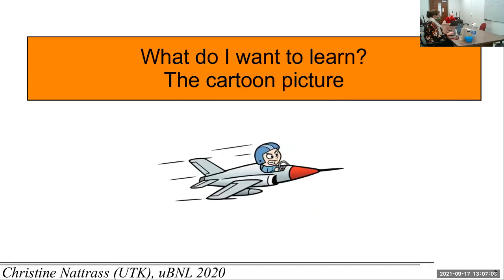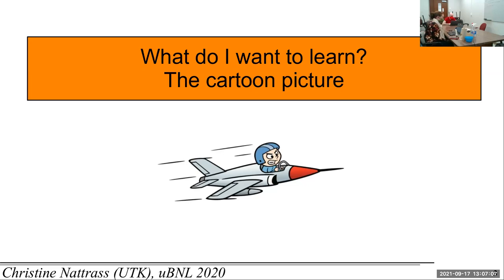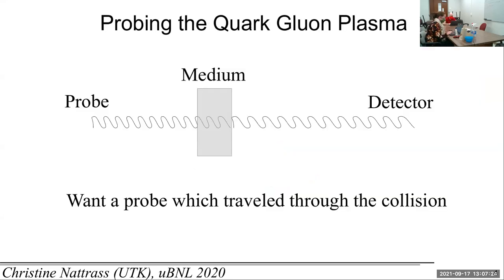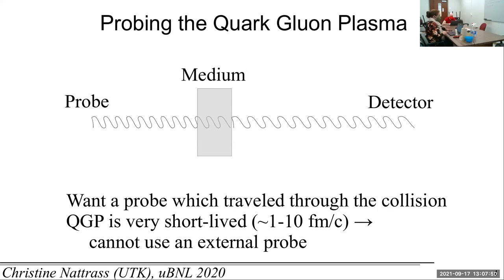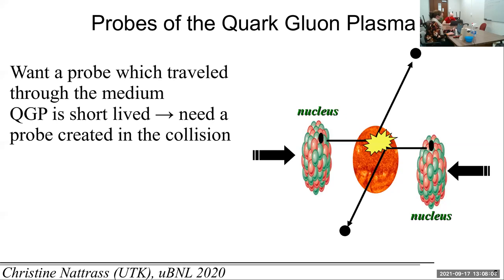Answers for jets are highly nontrivial, so we're going to start with a cartoon picture. What we're trying to learn with jets in the quark-gluon plasma is: use a probe, shine it through the medium, see how the probe is modified, and use that to determine the properties of the medium. The quark-gluon plasma is very short-lived — something like 1 to 10 femtometers, so about 10^-23 seconds. You can't shine something through the QGP; you need to use something made in the QGP. So we use jets.